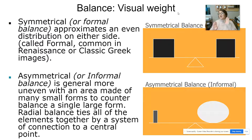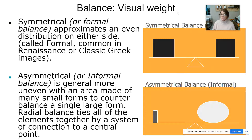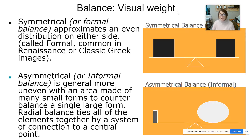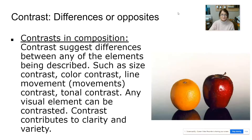The next type is asymmetrical — these are not the same on both sides; the weight is not evenly distributed. This is a more informal approach, generally more uneven, with the area made of many small forms or a counterbalance of a single large form. Radial balance is when the balance comes from the center of the page.